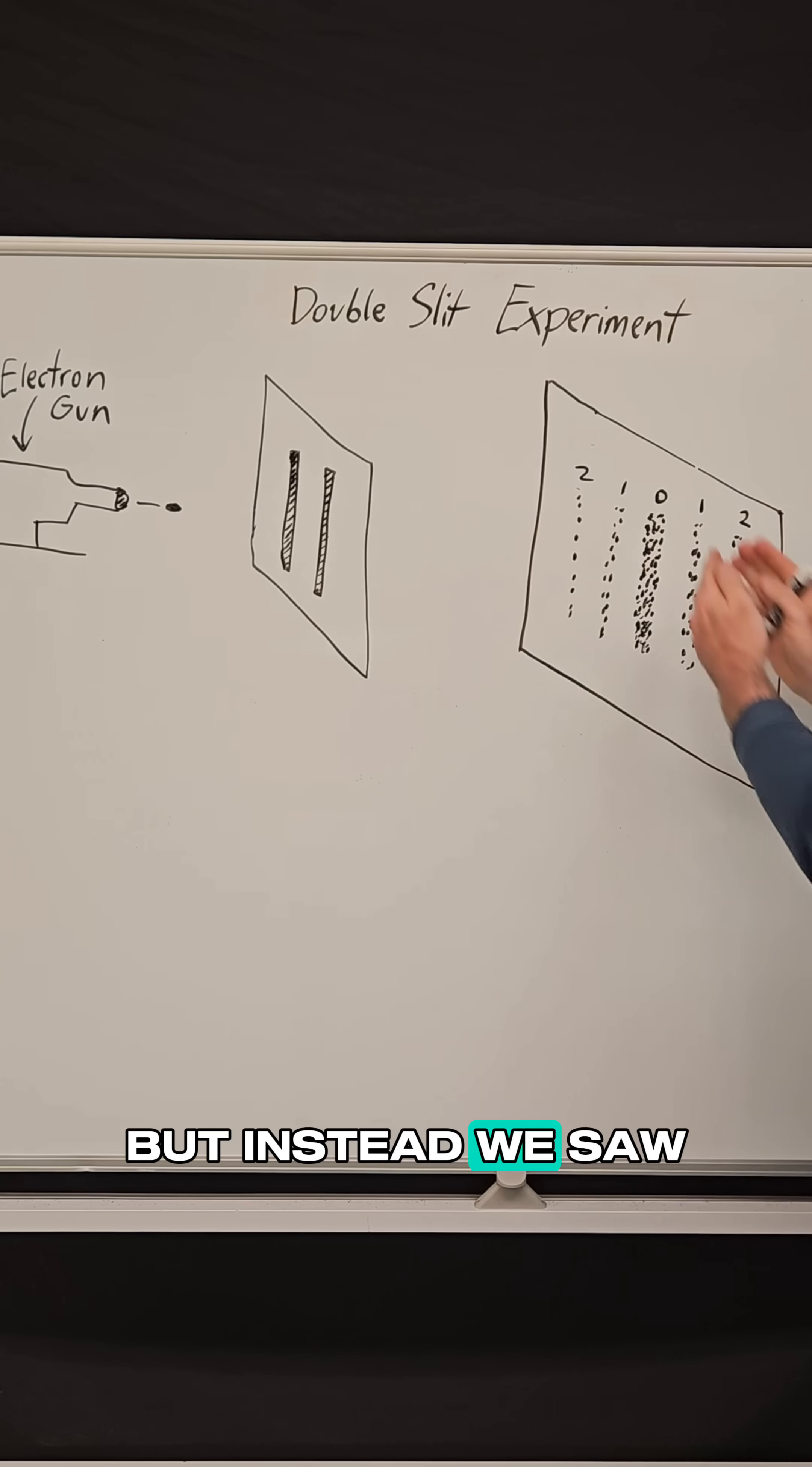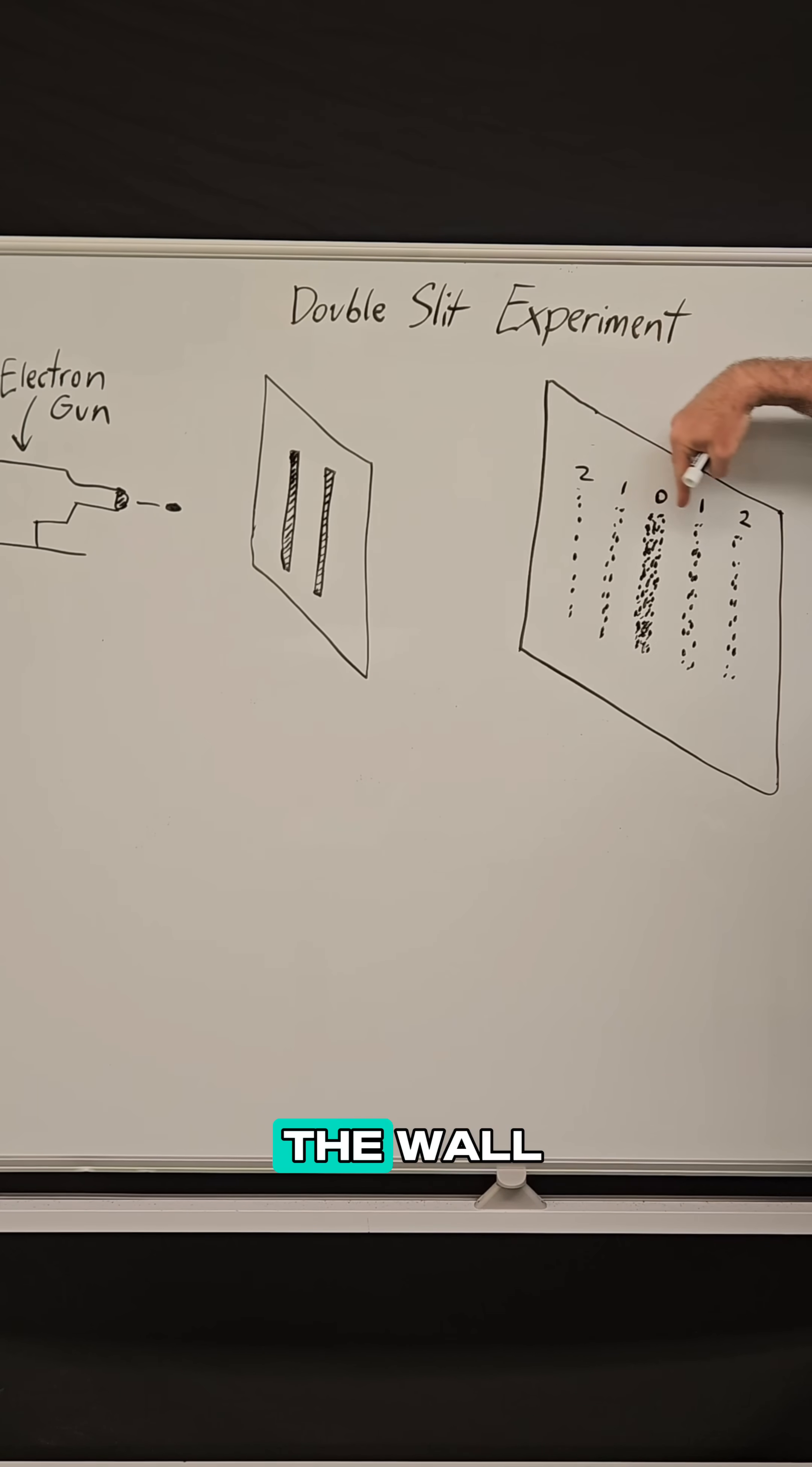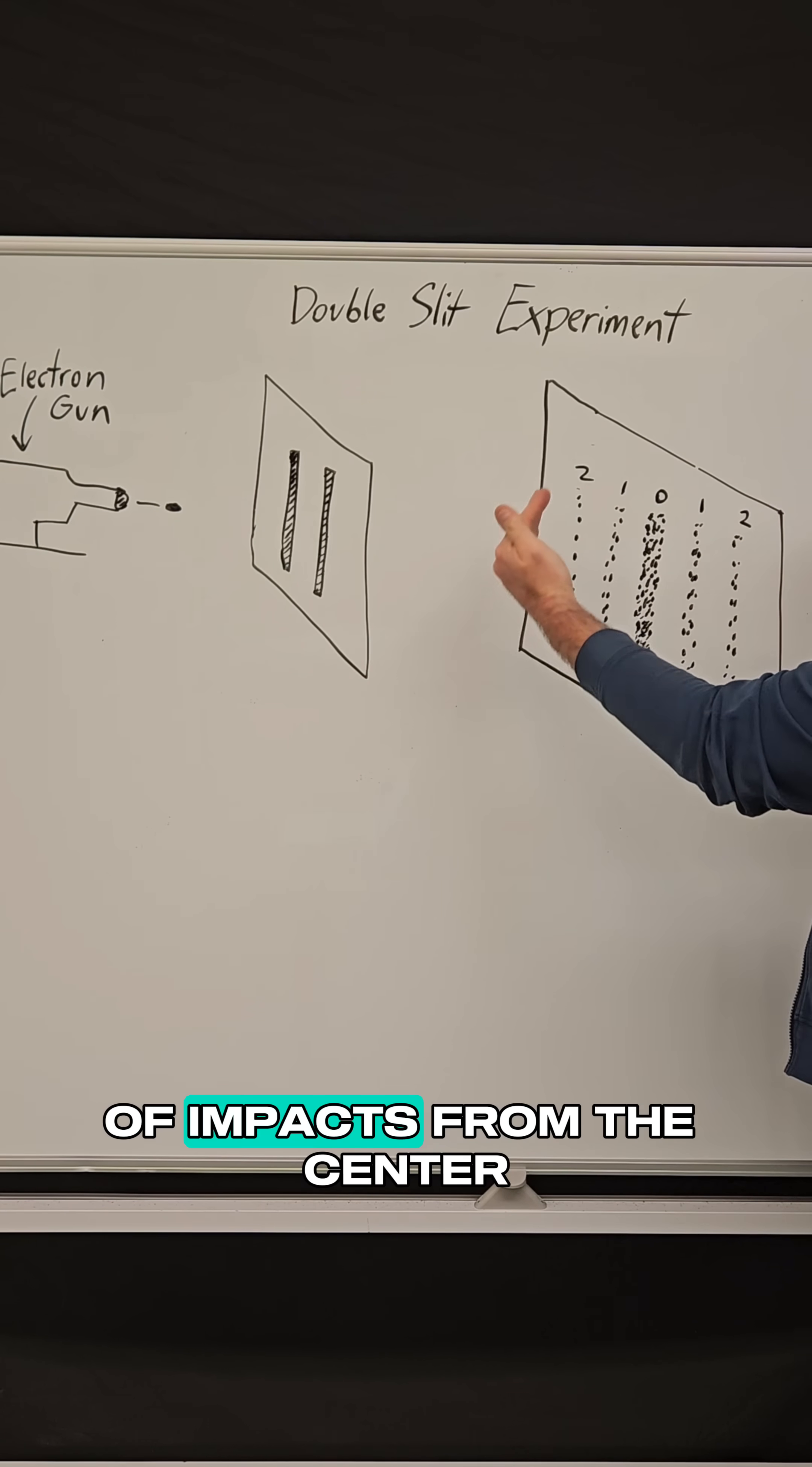But instead we saw this interference pattern emerge where instead of hitting in two spots, the electrons were hitting the wall in all these locations, mostly concentrated in the center, but with different concentrations of impacts from the center.